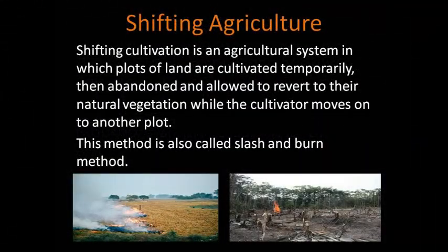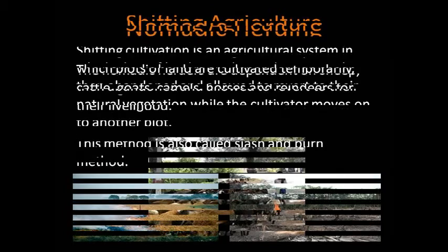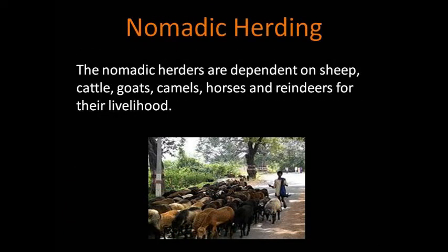Shifting cultivation is an agricultural system in which plots of land are cultivated temporarily, then abandoned and allowed to revert to their natural vegetation while the cultivator moves on to another plot. This method is also called the slash and burn method. Nomadic herders are dependent on sheep, cattle, goats, camels, horses and reindeer for their livelihood.